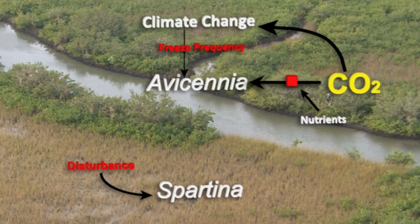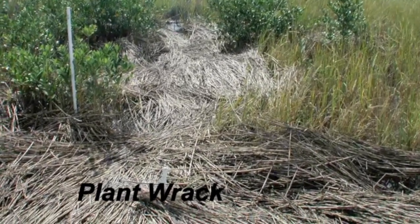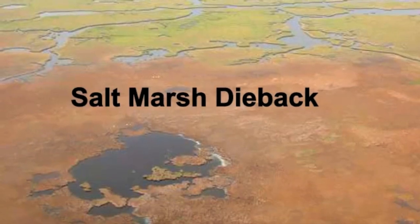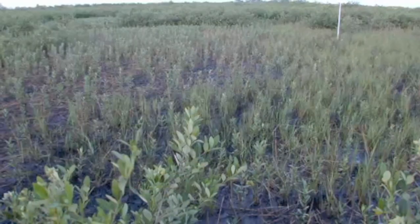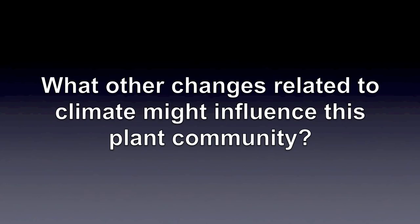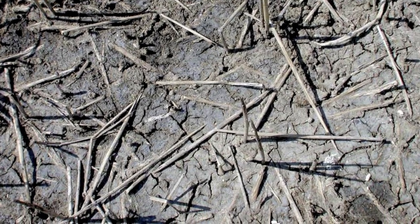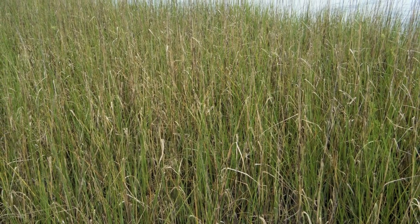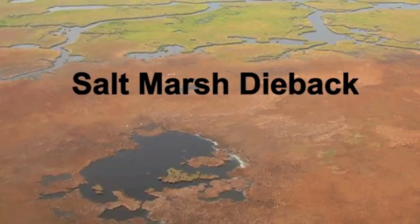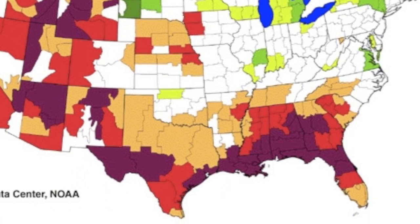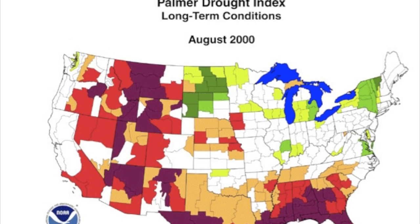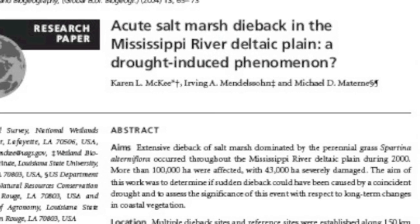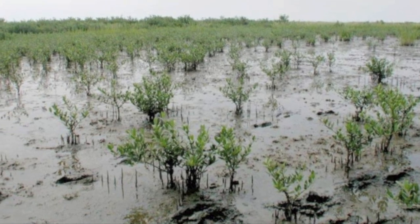Both small-scale and large-scale disturbances occur in salt marshes. For example, the deposition of dead plant material, called rack, can smother Spartina, creating bare patches where mangroves can get established. Large-scale dieback of salt marsh has also occurred in the past, which allowed suppressed mangroves to become dominant in areas once occupied by Spartina. With climate change, some regions will experience drier conditions and higher salinities. We can hypothesize that Avicennia is more tolerant of water stress and high salinity than Spartina, based on their natural distributions. Another piece of evidence is the large-scale dieback of salt marsh, which occurred in the Mississippi River Delta at the same time as a 100-year drought. A study of the sudden dieback phenomenon was reported in the journal Global Ecology and Biogeography. The results strongly indicated that dieback of Spartina was related to this extreme weather event, which left Avicennia untouched.